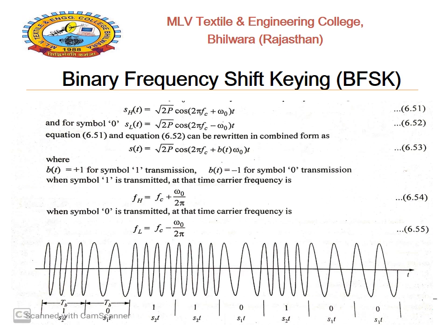The notable observation is that the amplitude, under root 2P, is the same for both symbol 1 and symbol 0 as seen in equations 6.51 and 6.52. As seen in equation 6.53, when symbol 1 is transmitted the carrier frequency increases: Fh = Fc + ω₀ / 2π. When symbol 0 is transmitted, the frequency is reduced: Fl = Fc − ω₀ / 2π. The waveform is shown for the bit sequence 1, 0, 1, 1, 0, 1, 0, 0.